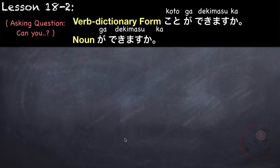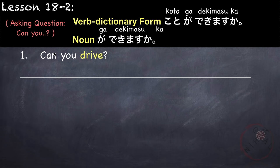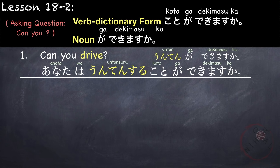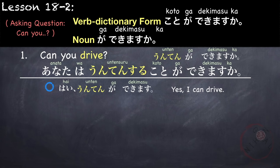We can also ask questions using this pattern by adding ka at the end. For example, can you drive? Anata wa — our verb is unten shimasu, in dictionary form it's unten suru, followed by koto ga dekimasu ka. Anata wa unten suru koto ga dekimasu ka. We can also use the noun ga dekimasu ka pattern: unten ga dekimasu ka. Here we just removed suru or shimasu and just use the noun 'driving.'